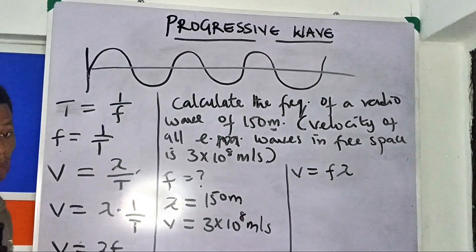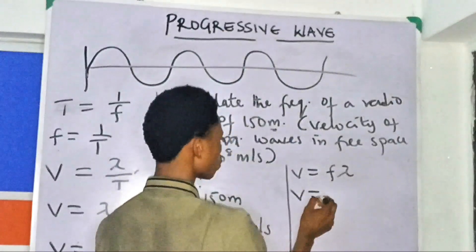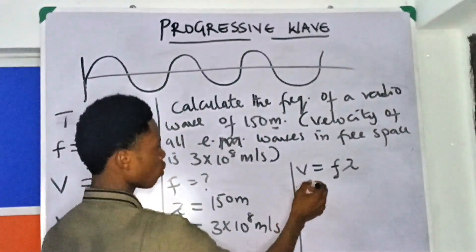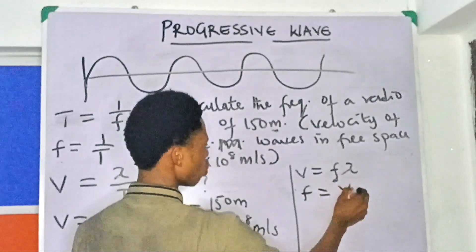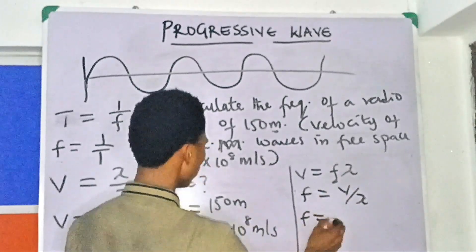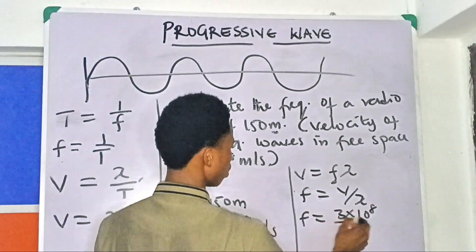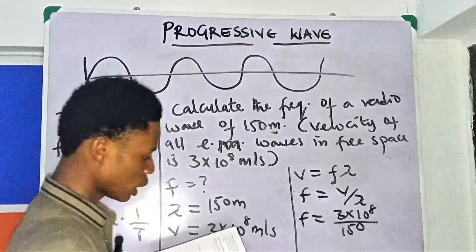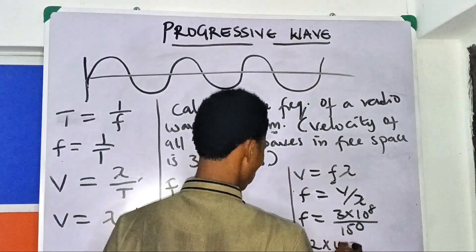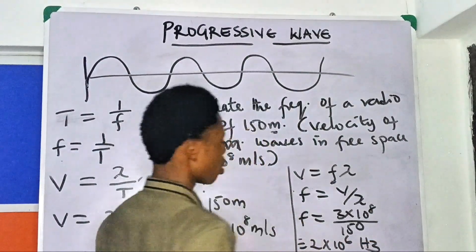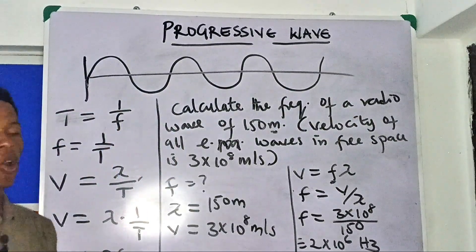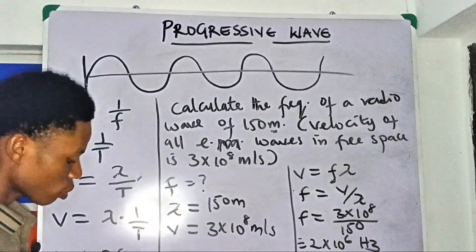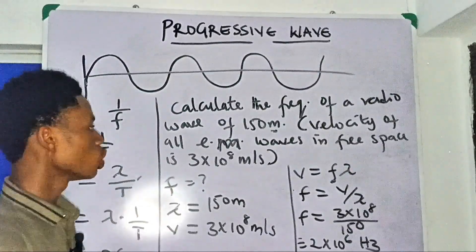We use v = fλ. We are given v and λ, and asked to find f, so we make f the subject: f = v/λ. Substituting: f = (3 × 10⁸) / 150 = 2 × 10⁶ Hz. The unit of frequency is hertz or per second, so the answer is 2 × 10⁶ Hz.